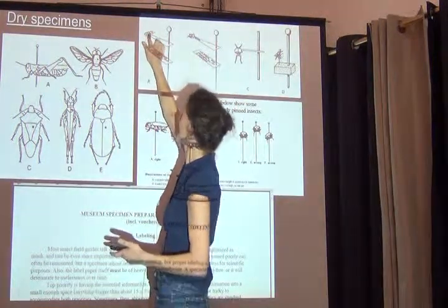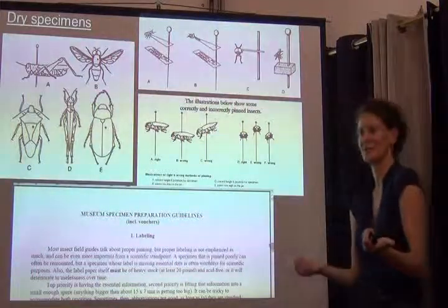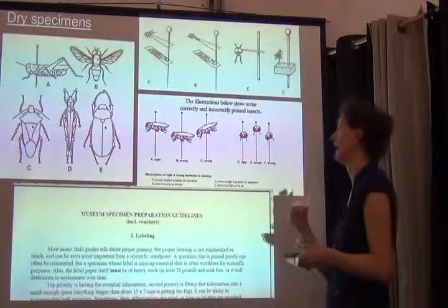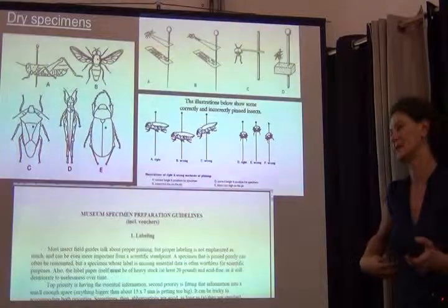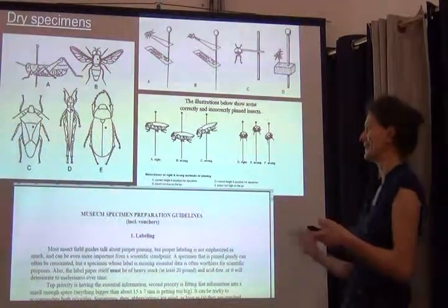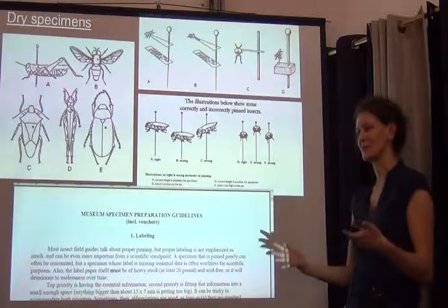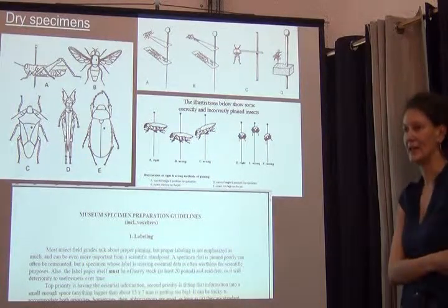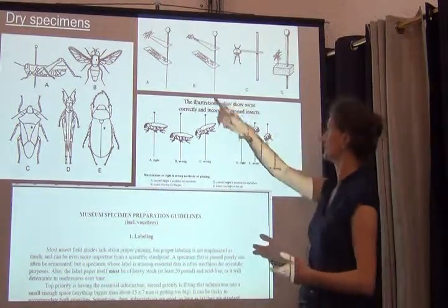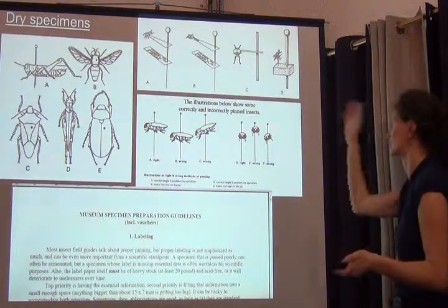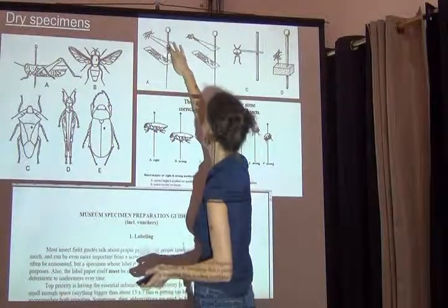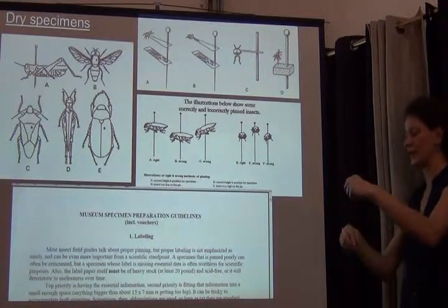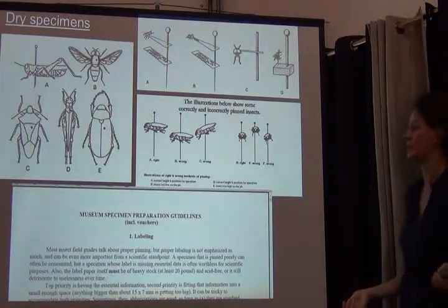The specimen is attached on one side of the thorax, capitalizing on the symmetry so the other side remains available for study. We put the point on the right side of the thorax. Also important for label placement: we move the label up closely to the point, because the label then protects the specimen from underneath — the point with the specimen sitting on it, and the label protecting from below.